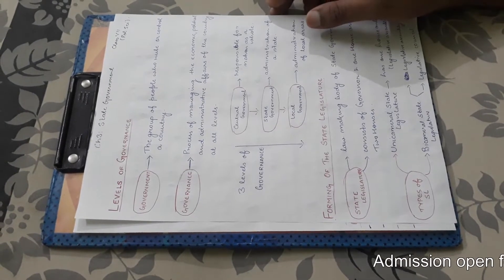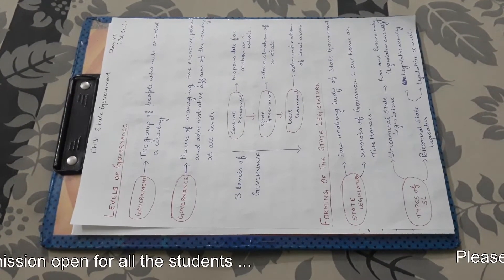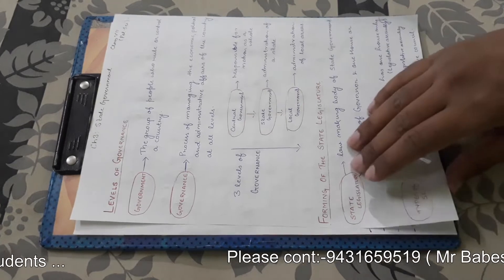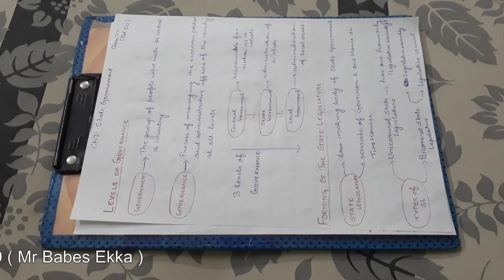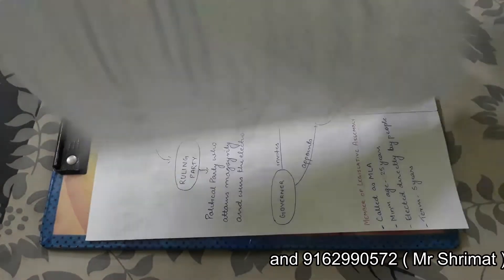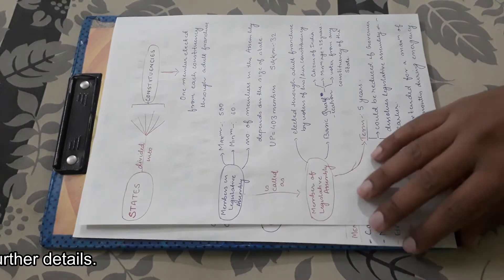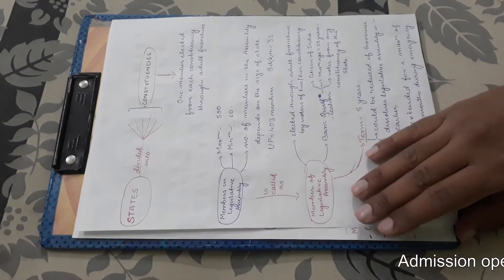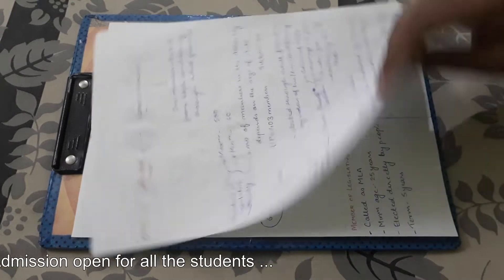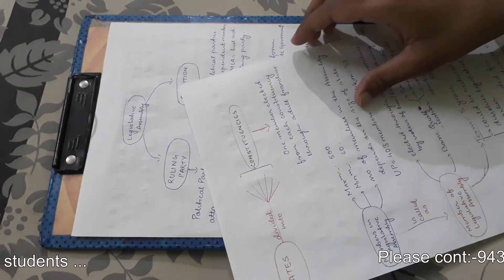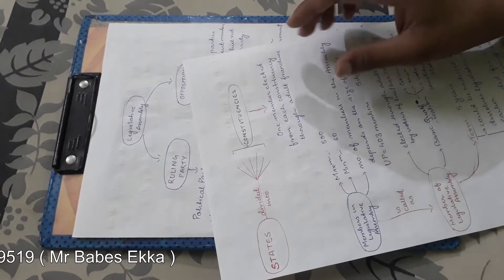Hello everyone, we are back with lecture 2 for class 7 political science, that is chapter 3 state government. In the previous class we read about the level of governance, the forming of the state legislature, members of legislative assembly, and the concept of constituencies. Today we are going to continue the legislative assembly part.